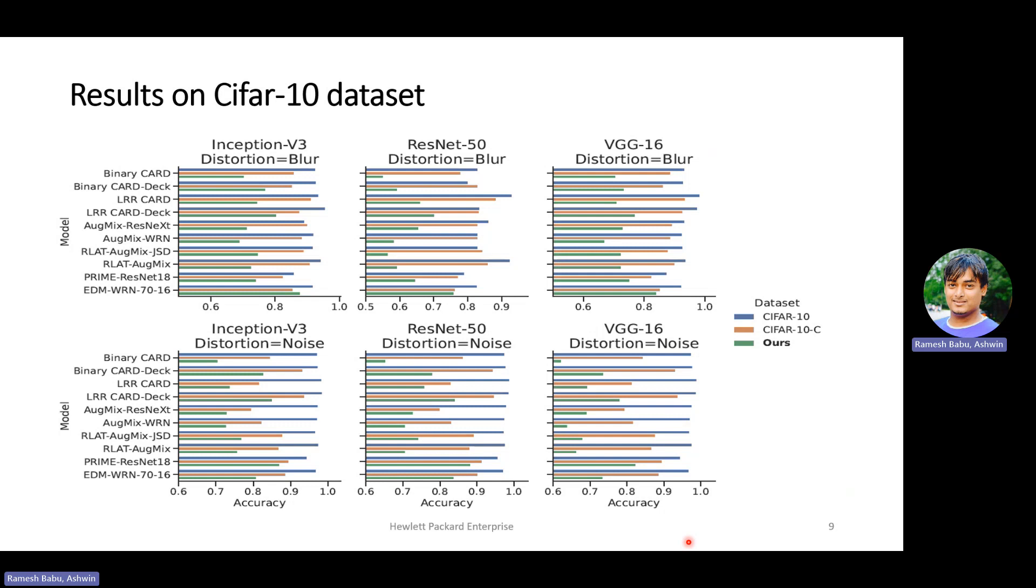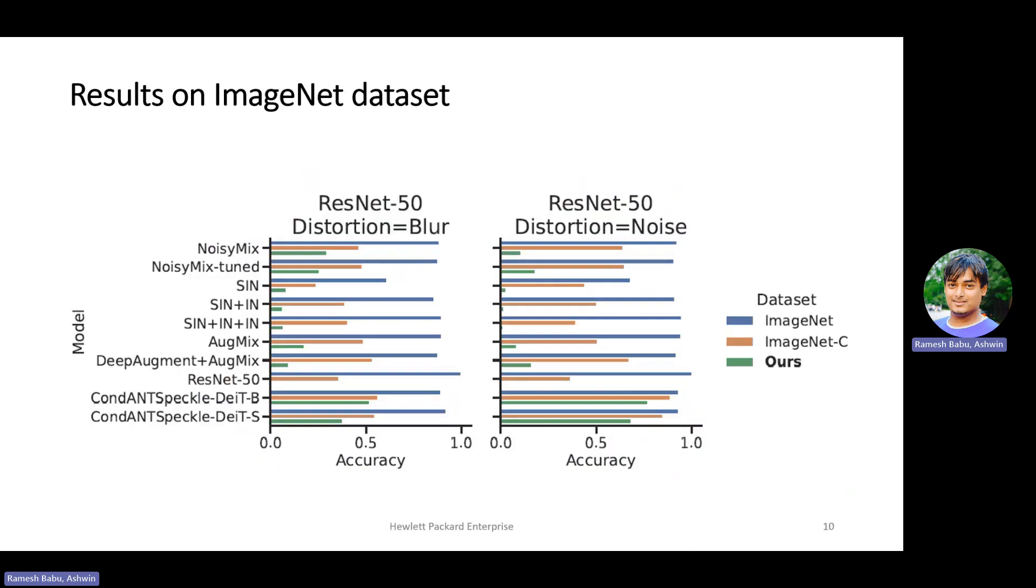Furthermore, the amount of distortions that our approach added is very less compared to the CIFAR-10C, and this is quantified with the L2 metric. So similar to the CIFAR-10C, here we will be evaluating it on ImageNet dataset. We see similar patterns for the ImageNet data as well, where the adversarial samples that are generated with our approach, these popular methods perform the least when compared to the original test set and the ImageNet C dataset.